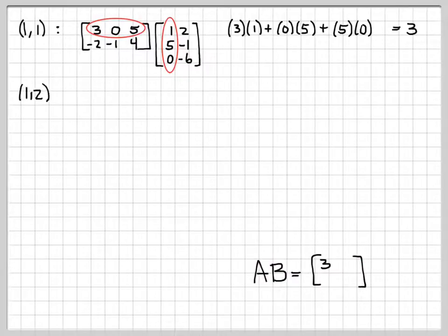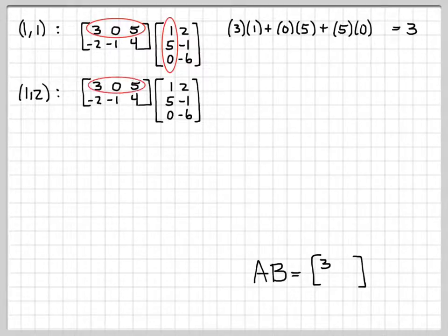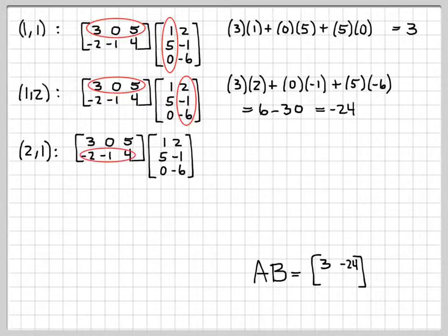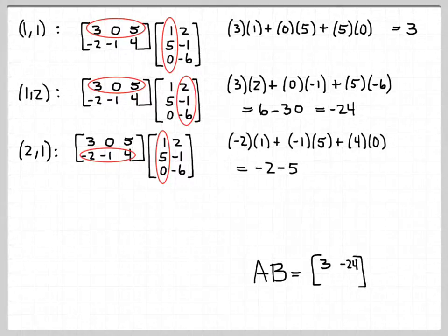And we'll just fill this out as we go along. So let's go ahead and figure out what the first row, second column entry is. So I write down my matrices A and B. I take the first row of A, and now I multiply it by the second column of B. That's where the 1, 2 comes from. So I multiply this out. 3 times 2 plus 0 times a negative 1 plus 5 times a negative 6. So this is 6 minus 30, which is a negative 24. So I now know this entry of my product.